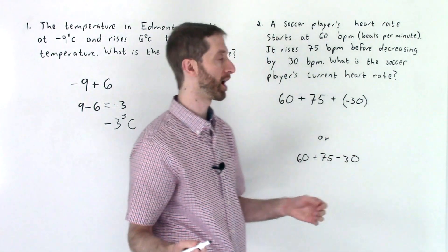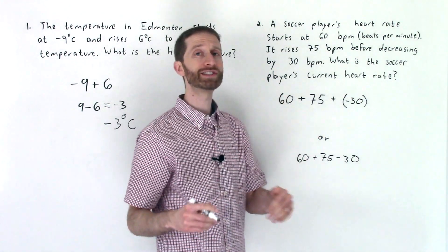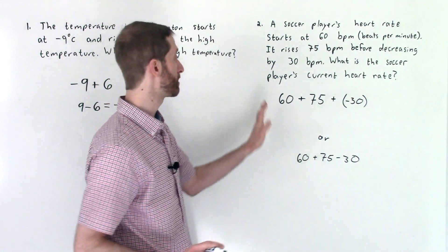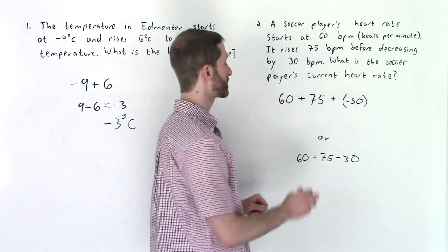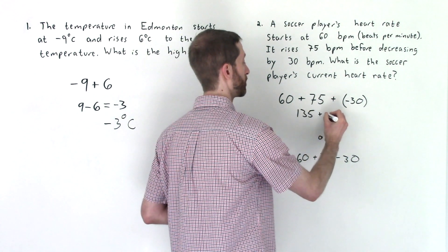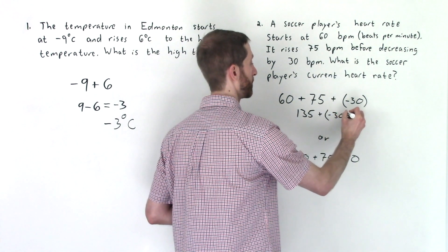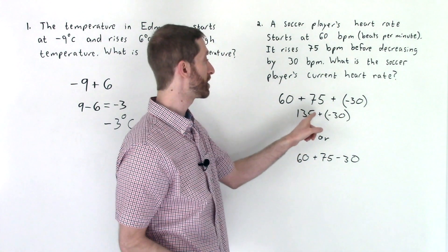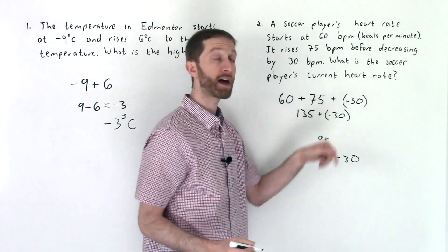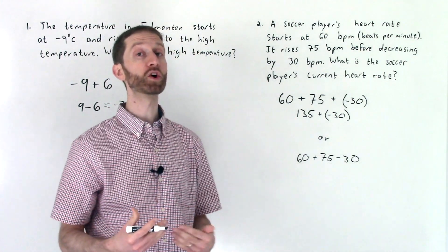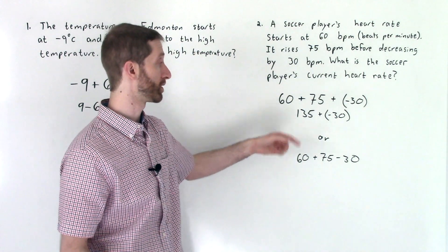So the order of operations dictate that we do all of our addition and subtraction from left to right. That would be the addition here first. 60 plus 75 is 135. You're left with plus a negative 30. So here we had signs that were the same. So we add them and kept the sign that was positive. Here we're adding two numbers where they have opposite signs. The larger number is 135. So we know that we're going to have a positive result in the end, which is good.